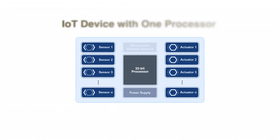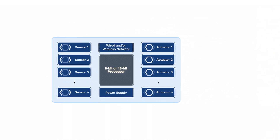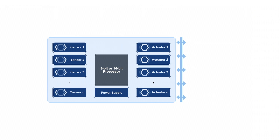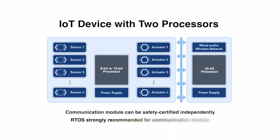When cost is not an issue, you can pick a single, powerful processor to run all the tasks required of your device. However, a common engineering compromise is to use two processors in the device. One low-cost processor is used in the physical world interface, like a sensor — this would be an 8 or 16-bit chip — and a second 32-bit processor runs the network interface. This second processor is often placed in a separate module, one that can be certified separately for standards compliance, and that module can then be used in multiple products. When two processors are used, a real-time kernel is not strictly required for the sensor or actuator. However, an RTOS is strongly recommended for the communication module.